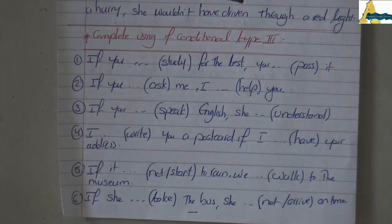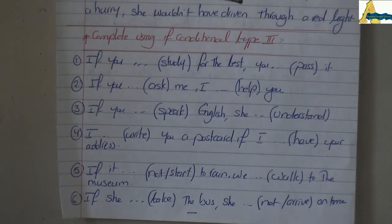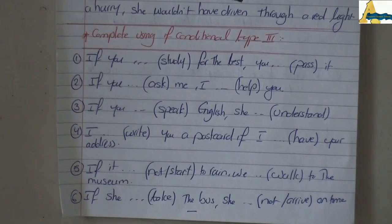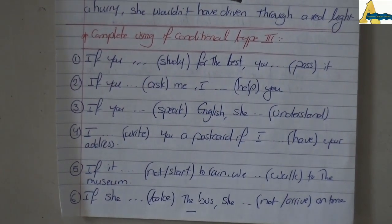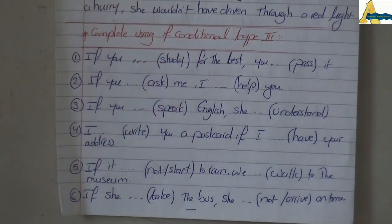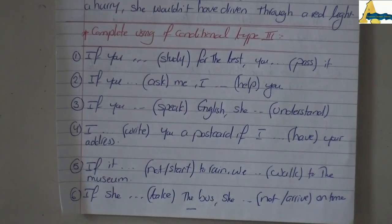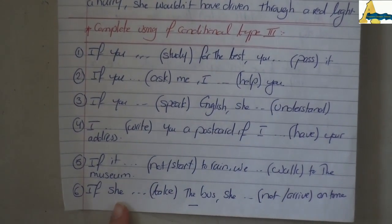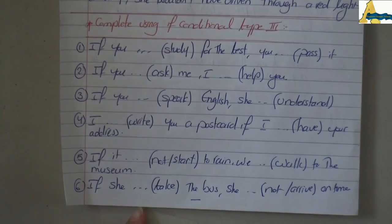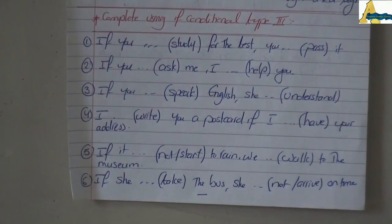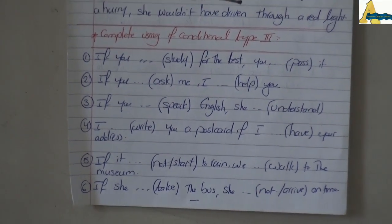In number five, note this is negative: 'if it hadn't started raining, we would have walked to the beach or to the museum.' Finally, in number six, after if we use past perfect: 'if she had taken the bus, she wouldn't have arrived on time.'